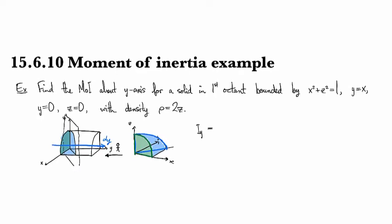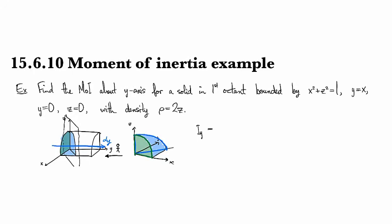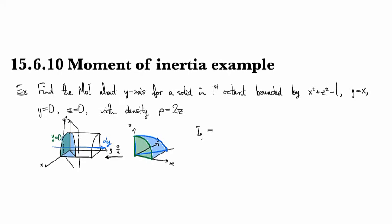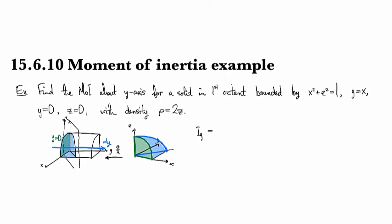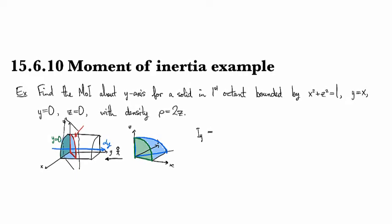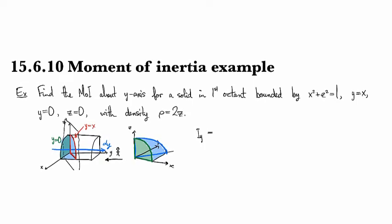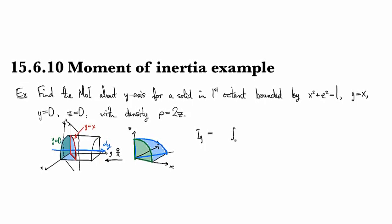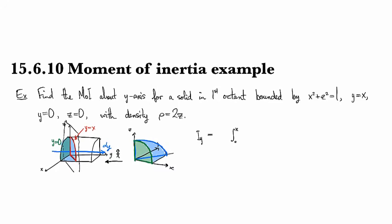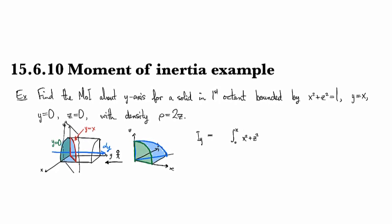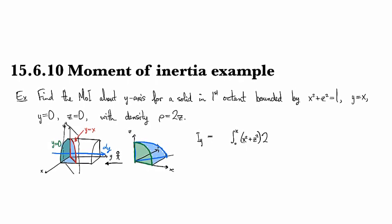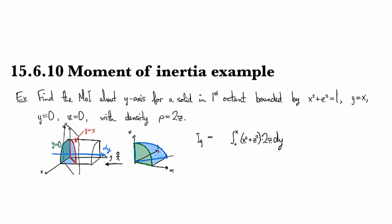So we're going to start at y equals zero on the left, the back plane. And then we're going to exit when we go through this slanted plane right here, which is where y is equal to x. So that gives us the bounds of zero to x for our innermost integral. And then this is going to be x squared plus z squared for the moment, and then times the density of 2z and then dy.